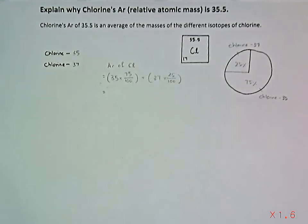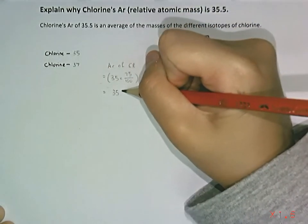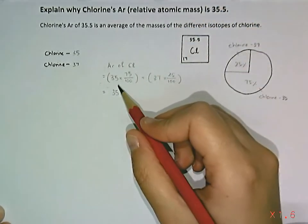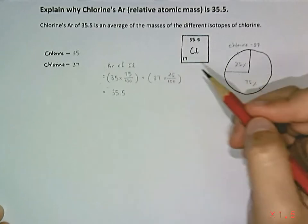So, if we check our calculator, the answer that we'll get is this. This is the average mass of chlorine.